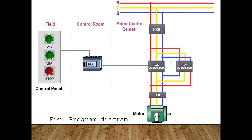Protection must be given so the motor cannot run in both directions simultaneously, even if the operator tries to press both buttons at the same time. We call this interlocking. In the PLC field side, we have three inputs — forward button, reverse button, and stop button — and two outputs: forward contactor and reverse contactor. Remember these numbers: three inputs and two outputs, as we will use this for the programming.